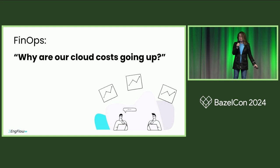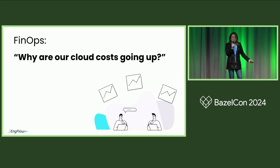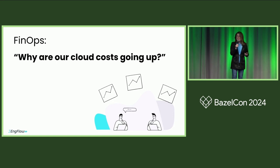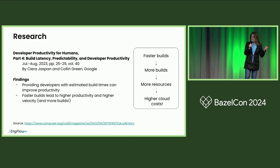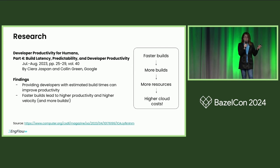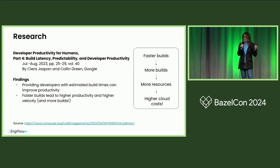And then you get a call from your FinOps team: why are our cloud costs going up? Google Research has concluded that over time, as developers build more code, build times go up. So optimizing build time is essential for productivity.